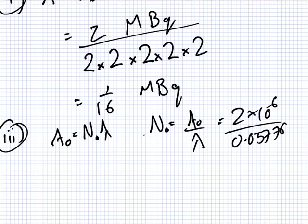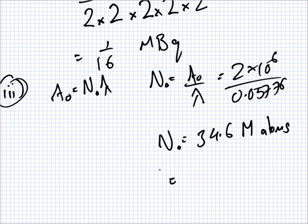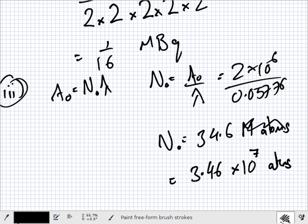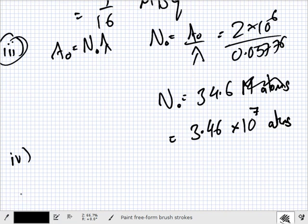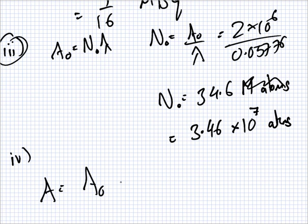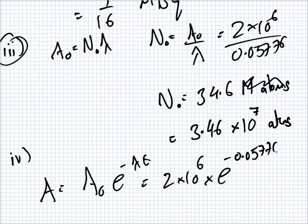So that's 2 times 10 to the 6th over 0.05776. Determine the activity after 5 seconds. Alright. So this one we actually have to use our formula. A equals A zero e minus lambda t which equals 2 times 10 to the 6th times e to the minus 0.05776 times 5.